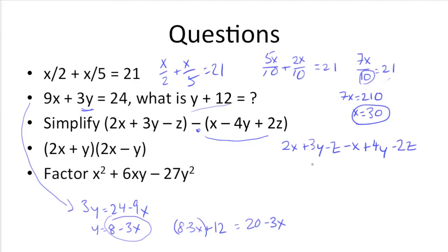Now we just need to combine like terms. So we have 2x - x, which gets us 1x, 3y + 4y, which gets us 7y, and -z - 2z, which gets us -3z.